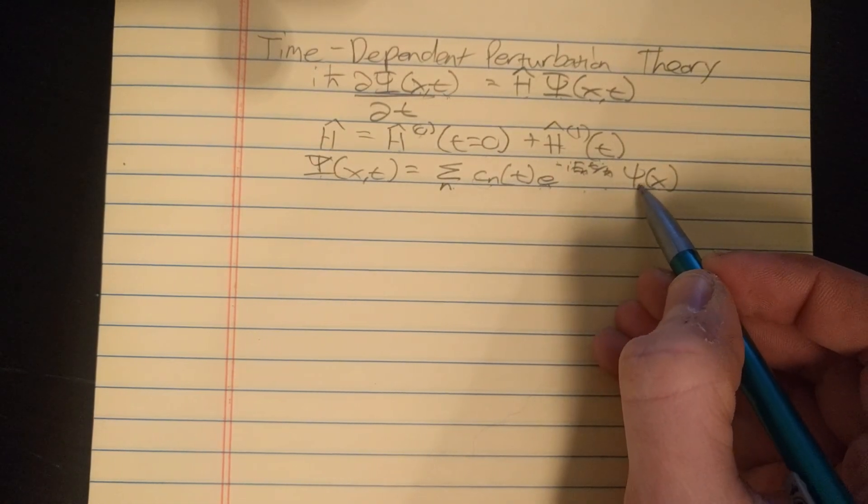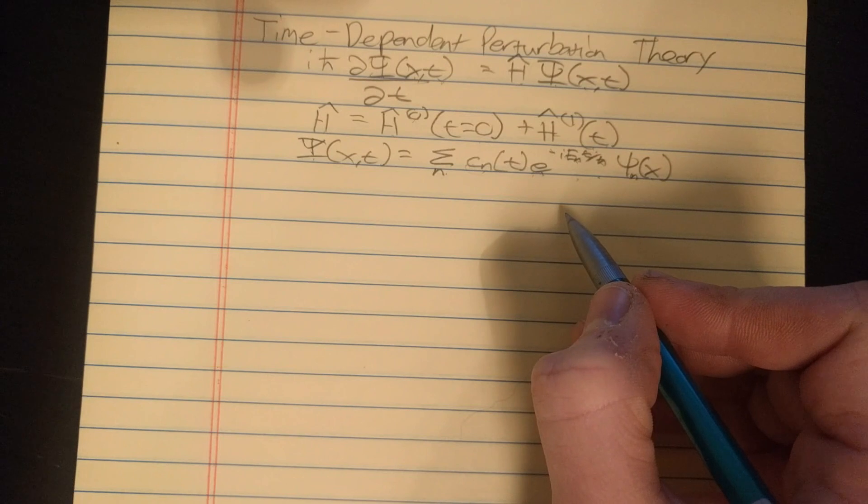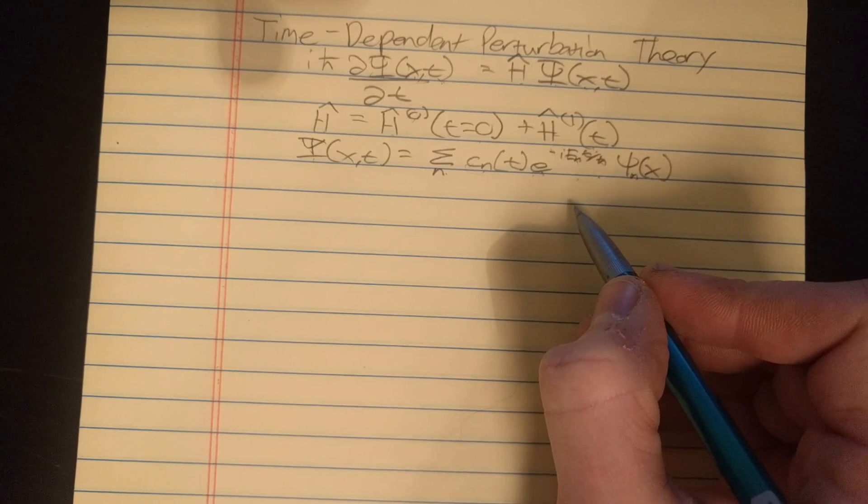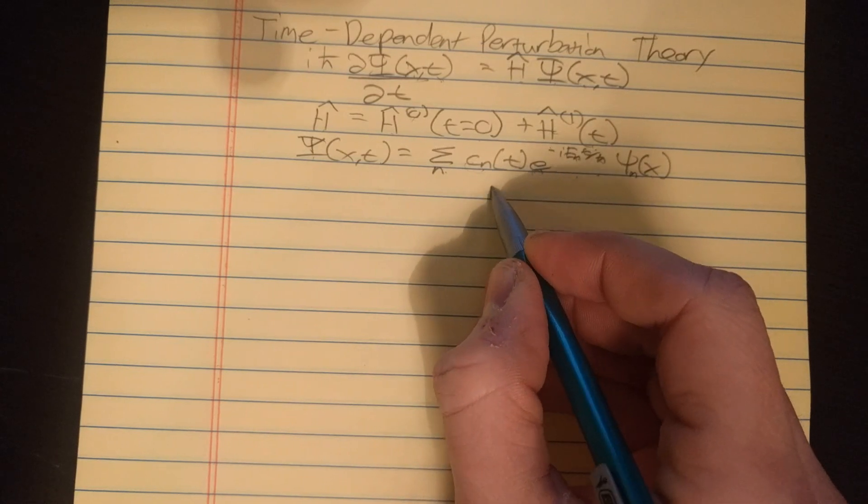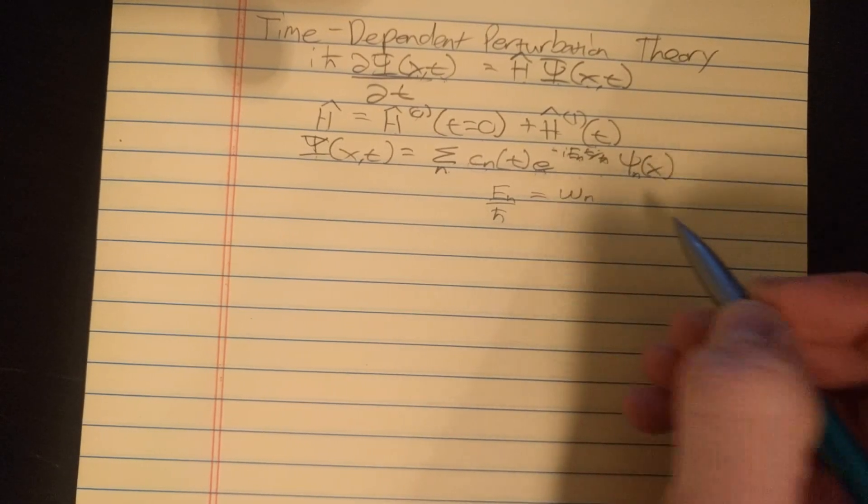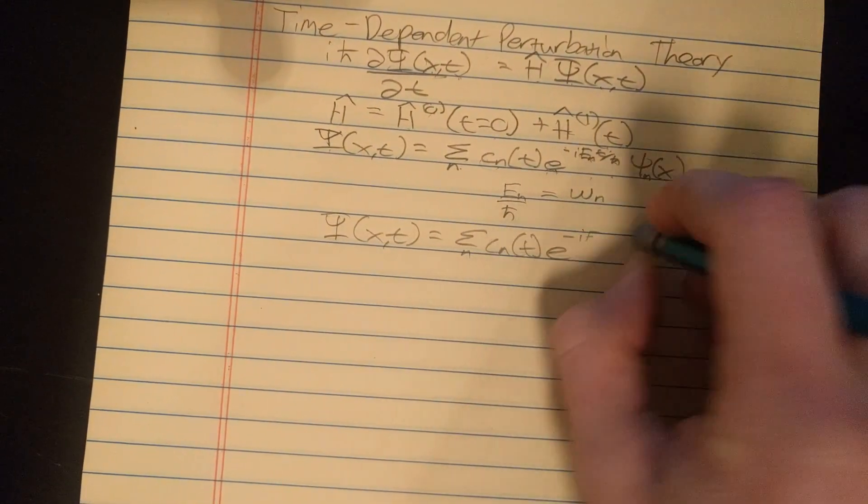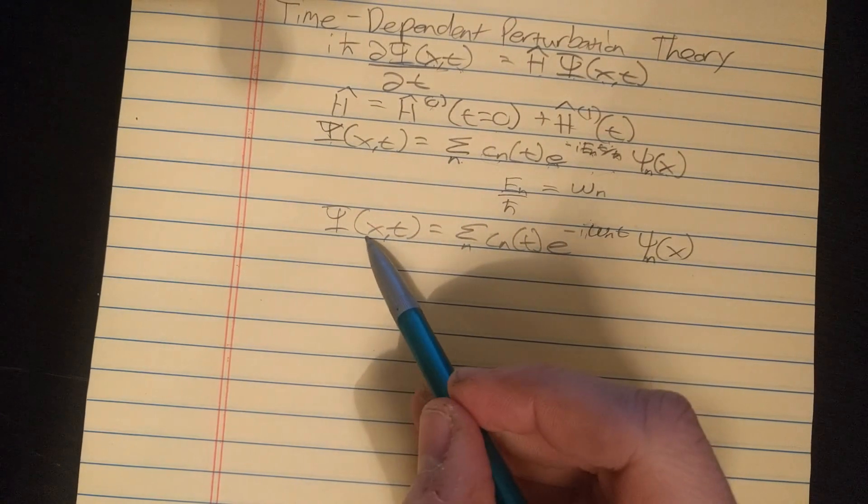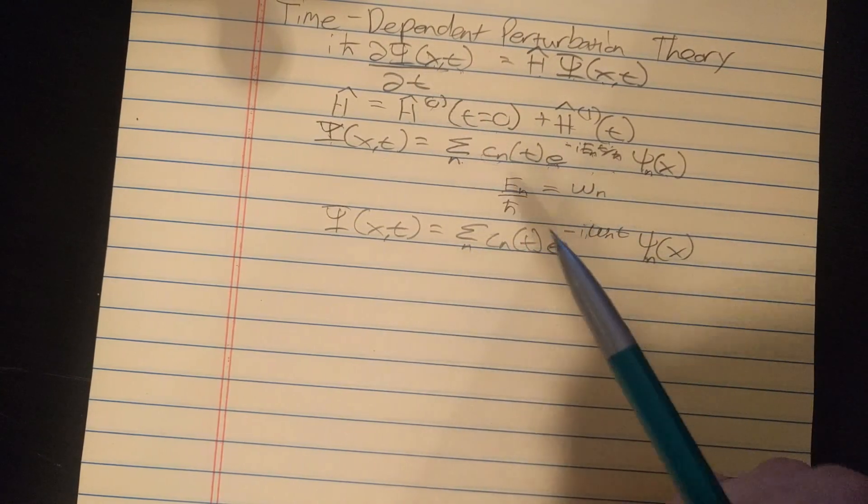Little psi of x is the stationary state. This should have an n on it. To make the math simpler so I don't have to write as much, I'm going to write E_n over h-bar as equal to omega n. So I can rewrite psi like this. We got our general state and we got our perturbing Hamiltonian. Now we plug both of these into the time-dependent Schrödinger equation.